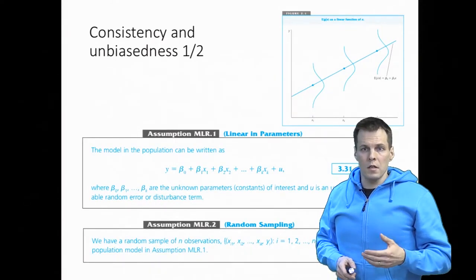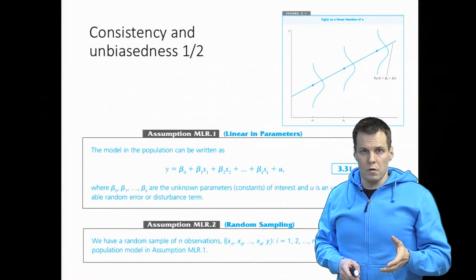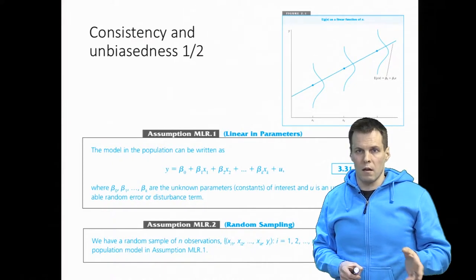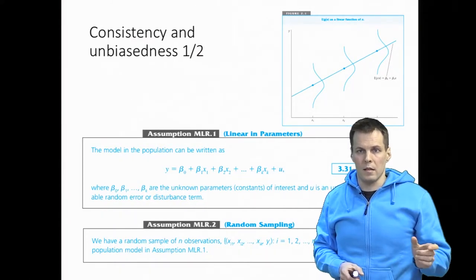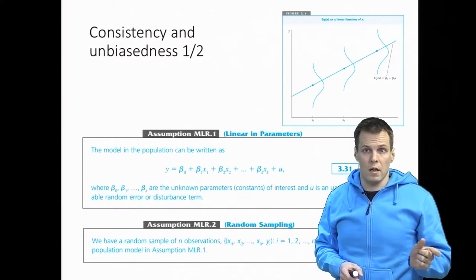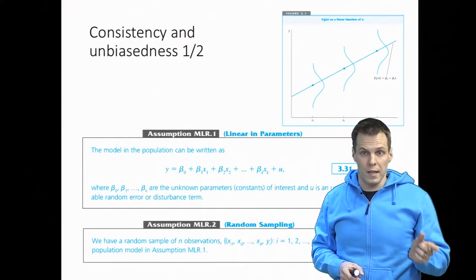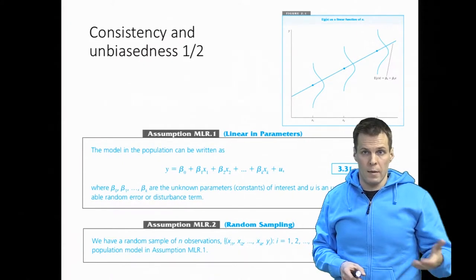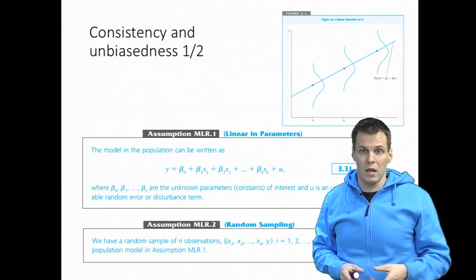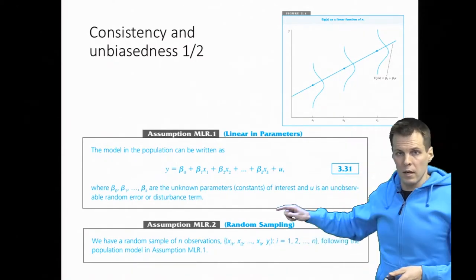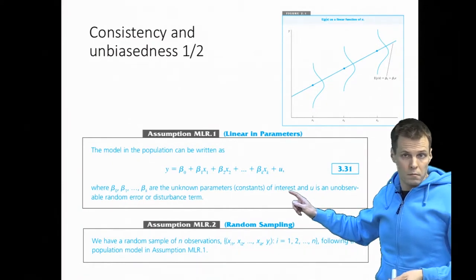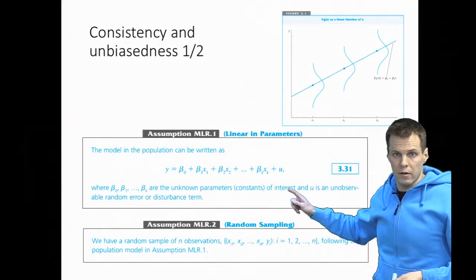OLS estimation requires four assumptions to provide consistent and unbiased estimates, where unbiasedness refers to any sample size — so regression analysis is unbiased regardless of sample size, even with only 10 observations, though estimates will be very imprecise. The first assumption is that we have a linear model, which basically just defines the model and that's all there is to it.